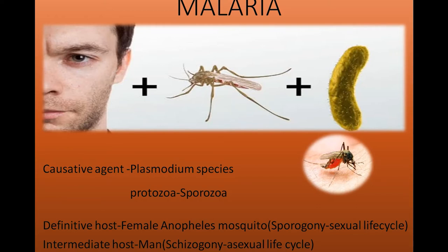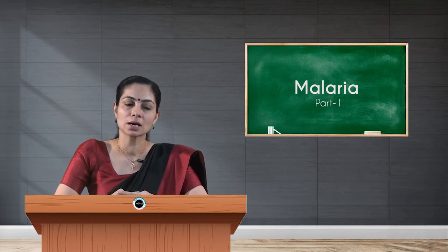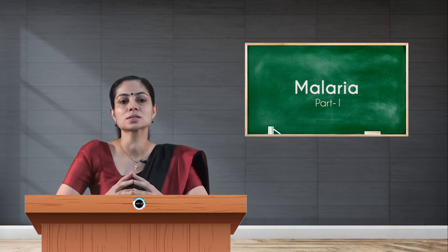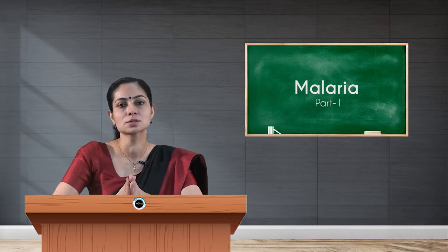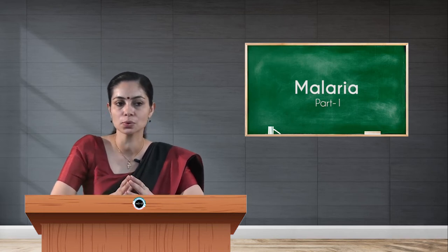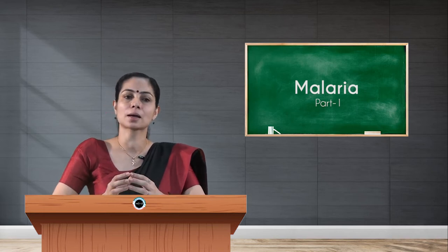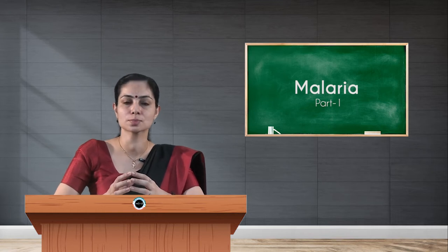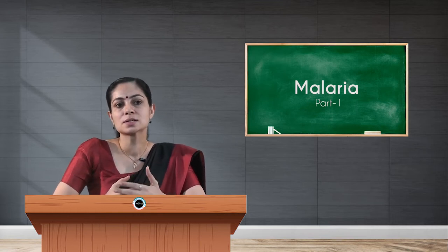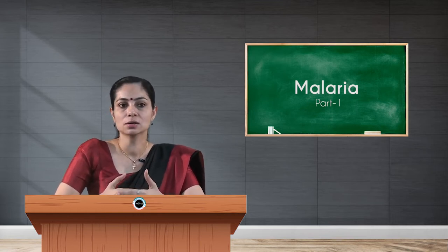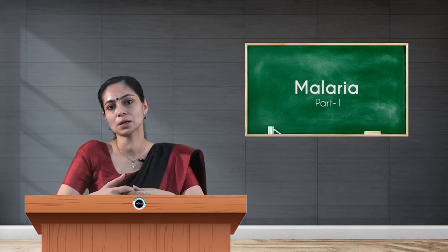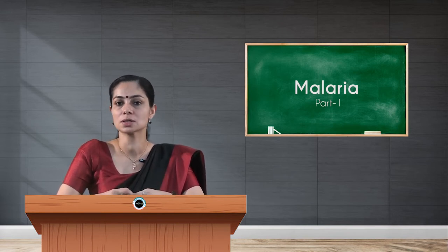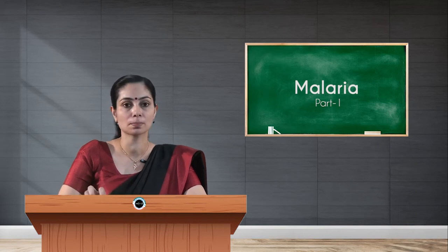One is the definitive host and the other is the intermediate host. The definitive host is where the parasite completes its sexual life cycle, called sporogony, which happens in the female Anopheles mosquito species. The asexual life cycle, termed schizogony, happens in the intermediate host, which is the human being.